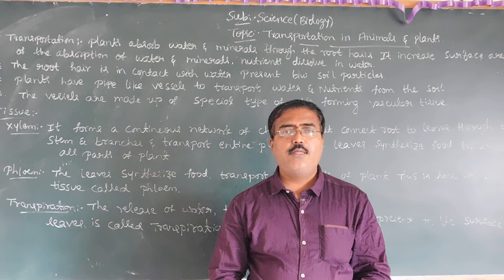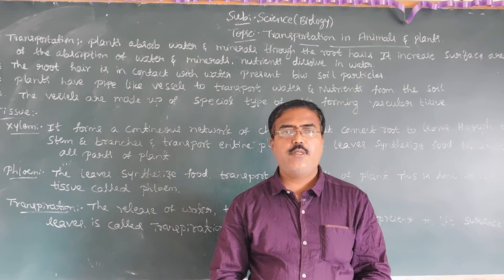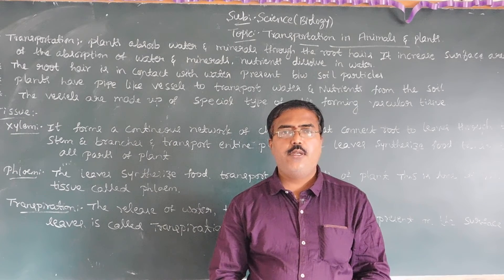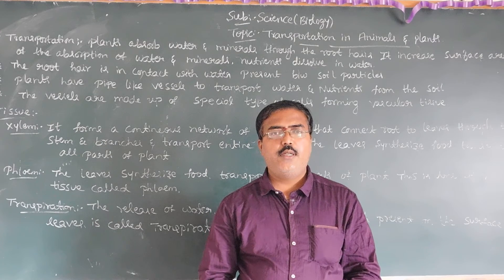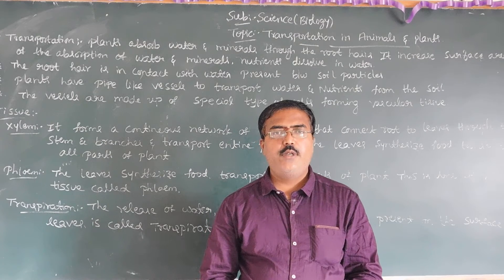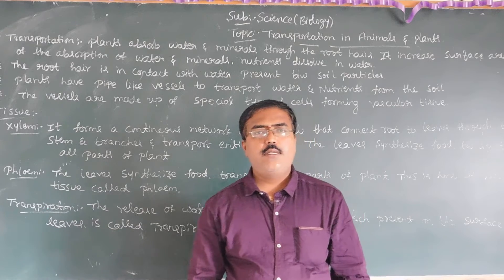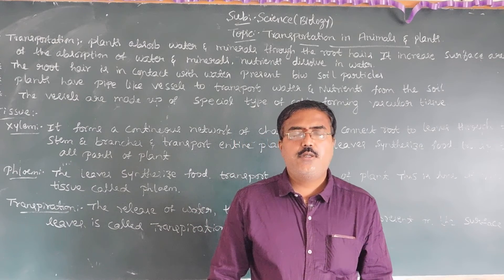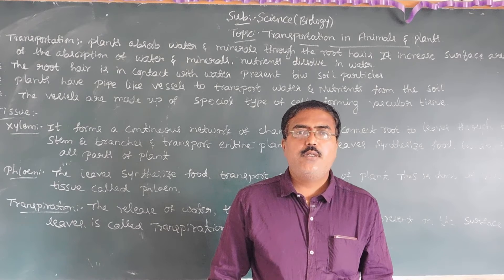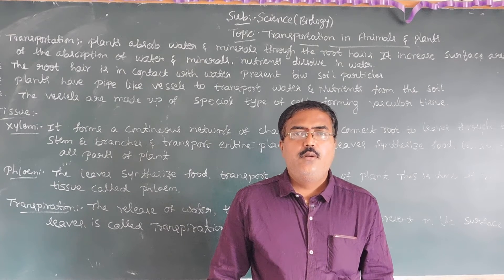Blood can carry oxygen from one part of the cell to another part. It can also release whatever nutrients are there, which can be absorbed from the blood. Blood vessels are also an important component of the transportation system, and they consist of the atrium and also ventricles.